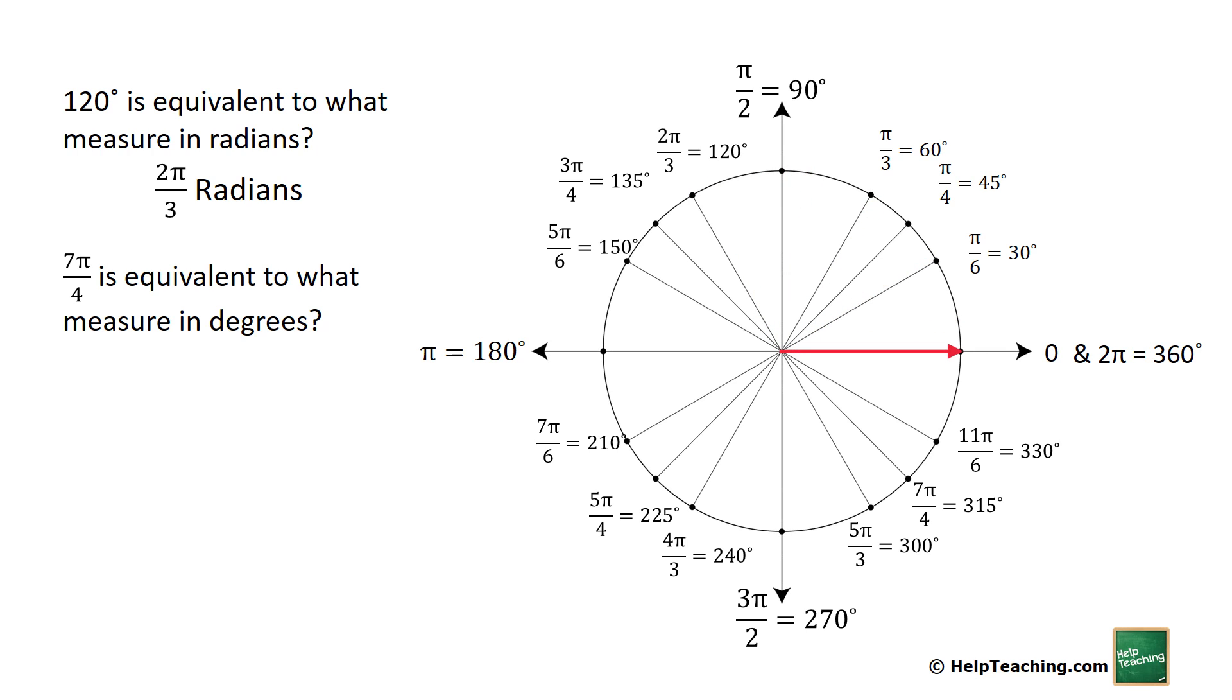Seven pi over four radians is equivalent to what measure in degrees? Again, we rotate all the way around to seven pi over four and that is 315 degrees.